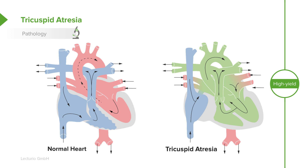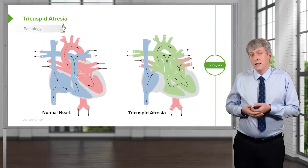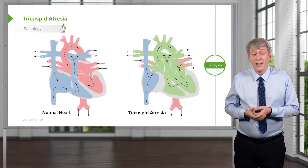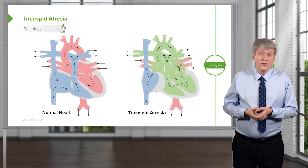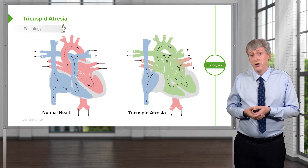That patient's blood will be able to get out to the body, creating a cyanotic infant. Some of that blood will get back across into the right ventricle and get to the pulmonary artery, typically through a VSD. These patients are very sick and will require an operation right about the time of birth.